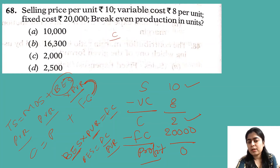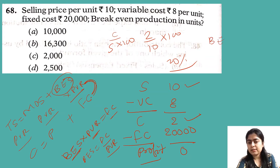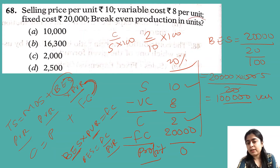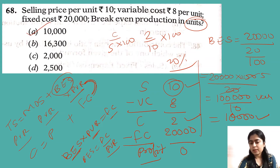Fixed cost is 20,000 divided by 20% equals rupees 1,00,000 as break-even sales in value. To convert to units, divide by selling price per unit (rupees 10), so the answer is 10,000 units.